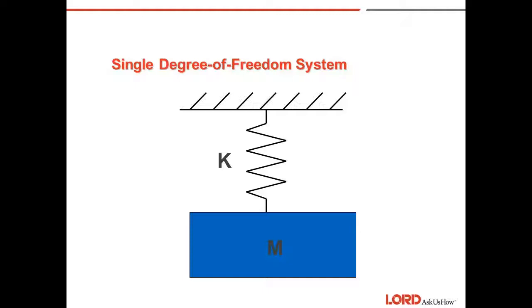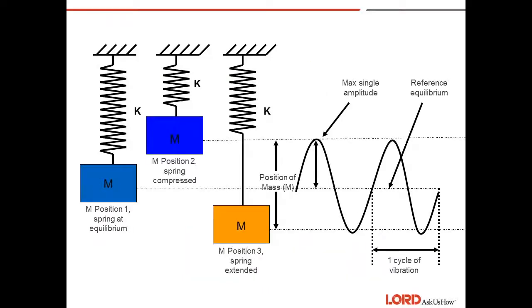In our example, this would be vertical. When a mass m is attached to a spring with a spring rate k, the mass moves to its position of equilibrium. The difference between a spring's undeflected free length and its position of equilibrium is called the system's static deflection, or D-stat.